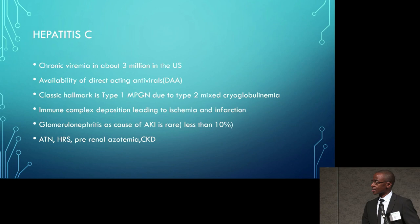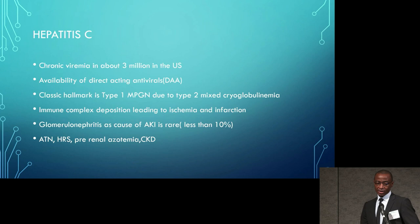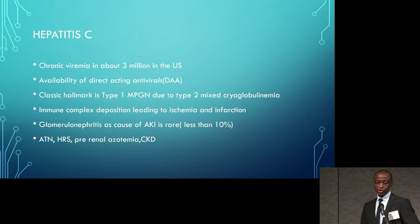Hepatitis C is the second viral disease we'll focus on. About 3 million individuals in the United States have chronic viremia, and the landscape is certainly changing with the advent of direct-acting antivirals. The classic hallmark of hepatitis C-associated renal disease is type 1 membranoproliferative glomerulonephritis, driven by immune complex deposition. Glomerulonephritis as a cause of acute kidney injury is rare — less than 10%. Most patients with hepatitis C present with AKI due to other causes: acute tubular necrosis, hepatorenal syndrome, pre-renal azotemia, or chronic kidney disease largely associated with diabetes.